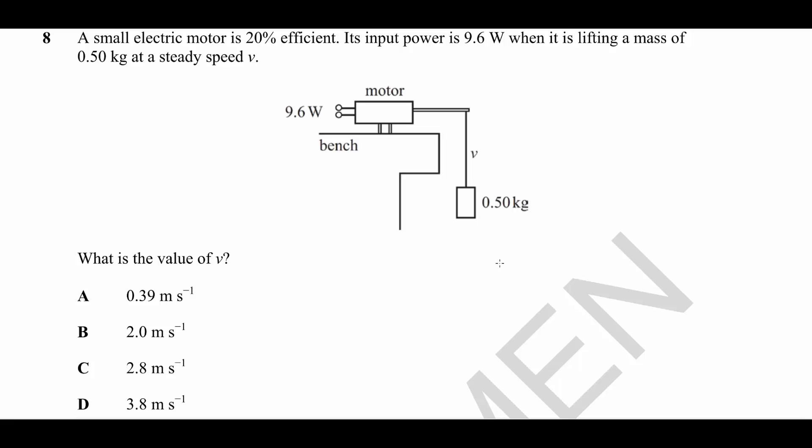Question number eight. We have a small electric motor, 20% efficiency, an input power of 9.6 watts, and it's lifting a mass of half a kilogram at a steady speed upwards of V.